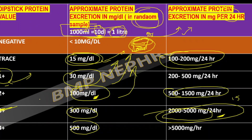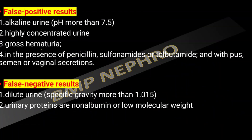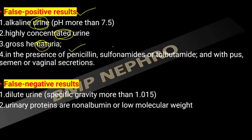The dipstick result purely depends on the amount of protein in the collected sample. If the urine is dilute, it may give a falsely negative result. Factors causing false positive results include highly alkaline urine, highly concentrated urine, and drugs such as penicillin, sulfonamides, and tolbutamide.